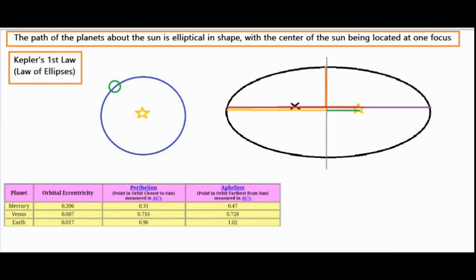In this video we're going to be taking a look at Kepler's three laws. We're going to look at each law individually so we can thoroughly discuss the concepts, starting off with Kepler's first law, the law of ellipses. It states that the path of the planets about the sun is elliptical in shape with the center of the sun being located at one focus.